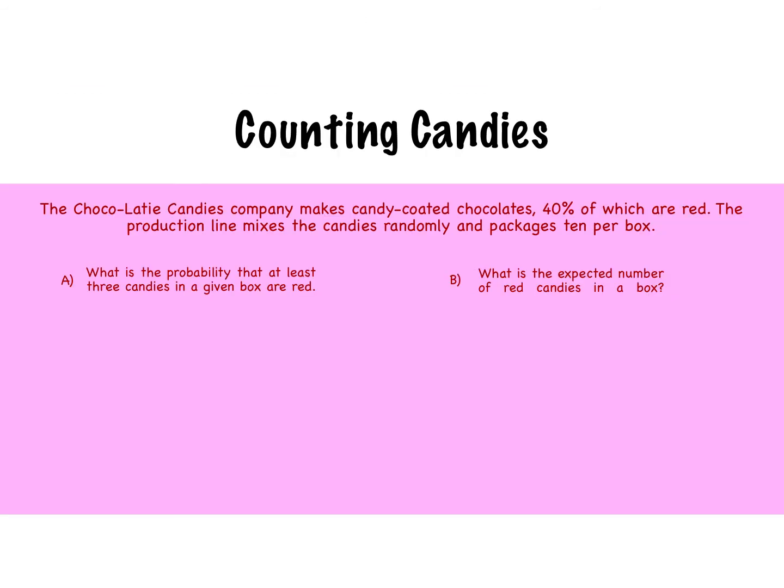Counting candies. The Chocolati Candy Company makes candy-coated chocolates, 40% of which are red. The production line mixes the candies randomly and packages 10 per box, which means you have a 40% chance of getting a red candy. So the probability of that happening is 0.4.